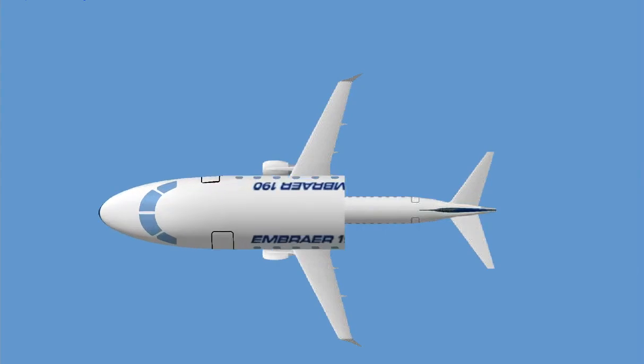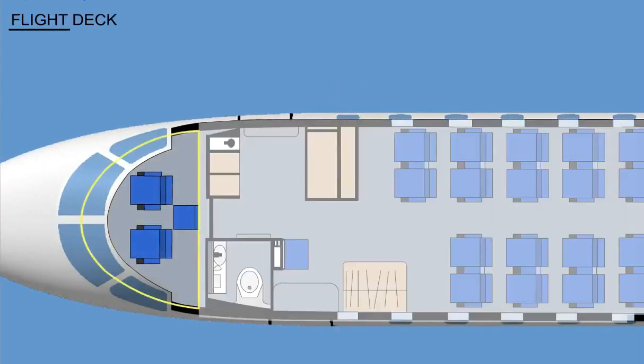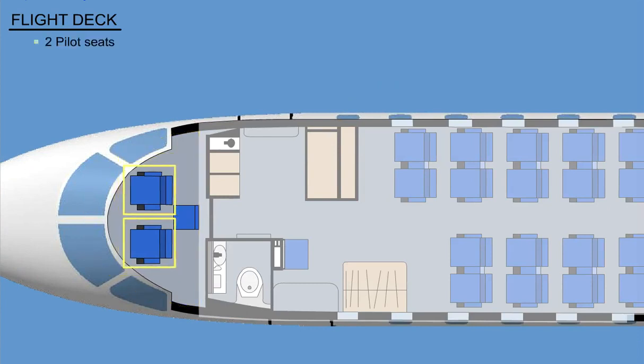Let's have a closer look at the interior of the Embraer 190. The flight deck is configured as follows: there are two pilot seats. The one on the left-hand side is the commander seat. The one on the right-hand side is the first officer seat.